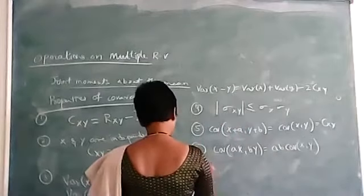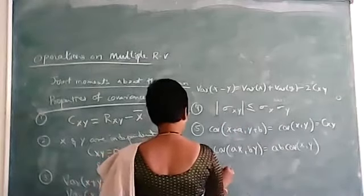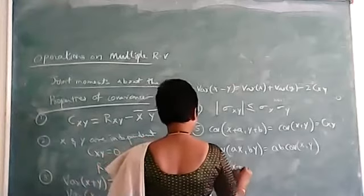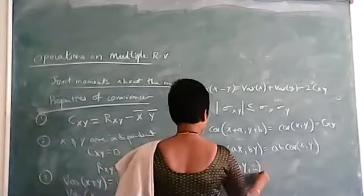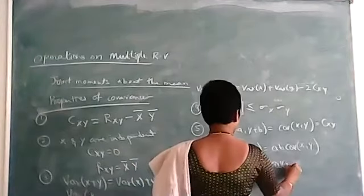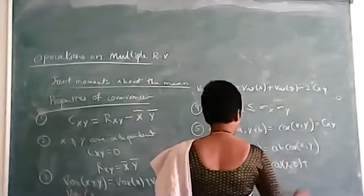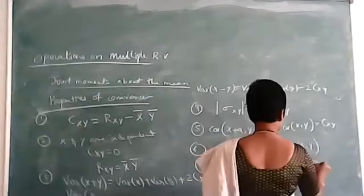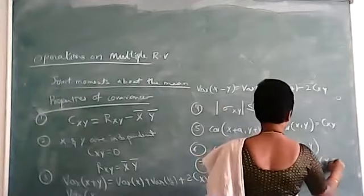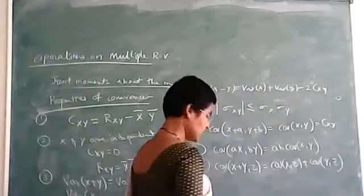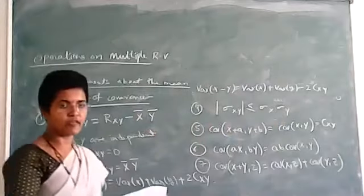And the seventh property is covariance of X plus Y comma Z equal to covariance of X comma Z plus covariance of Y comma Z. These are the seven properties of covariance.